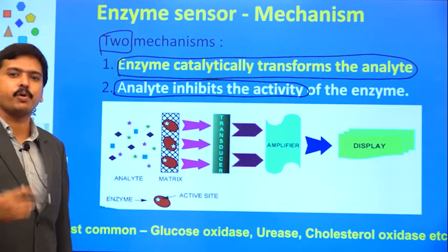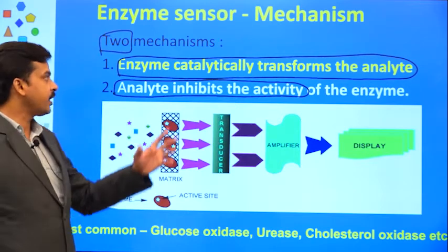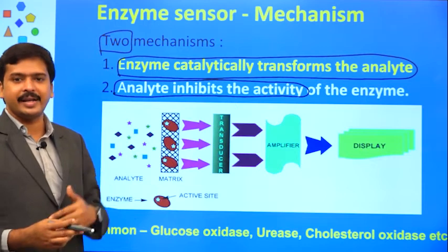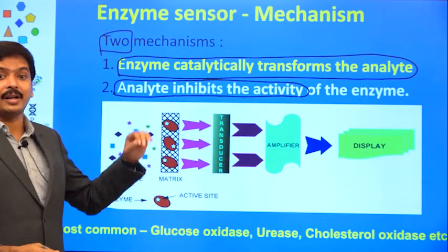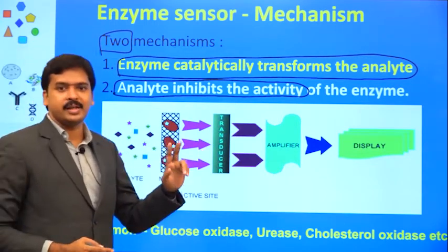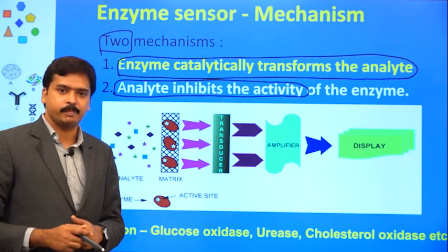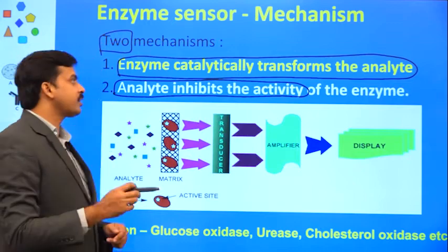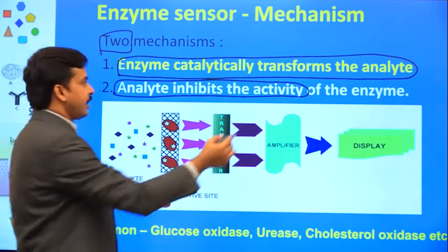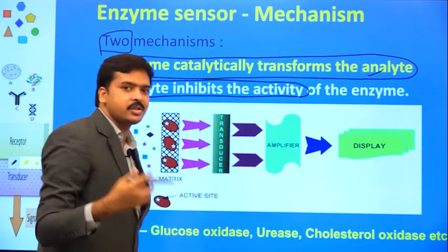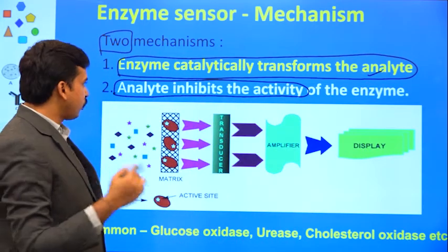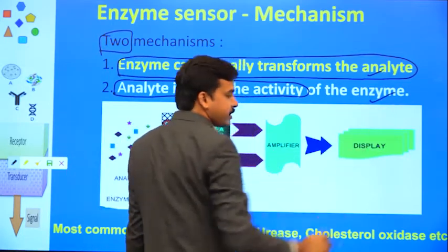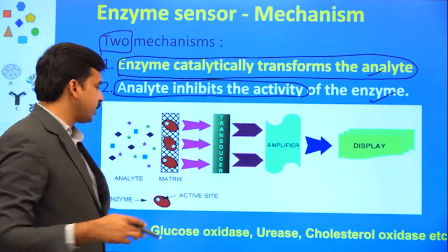Do not think only a positive signal is a considerable mechanism. Even a negative signal, based on our reference electrode, can be adjusted either way. But initially, while designing, you should decide whether you are verifying the transformation of the analyte — that is, the reduction in analyte concentration — or whether the activity of the enzyme is your interest. Based on these two things, either way you can proceed.